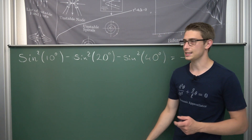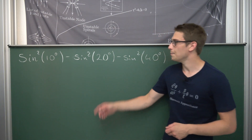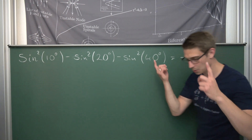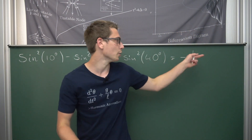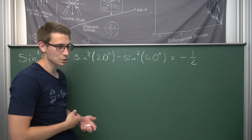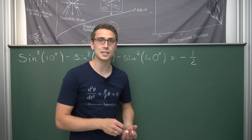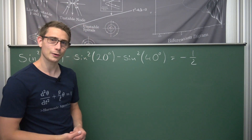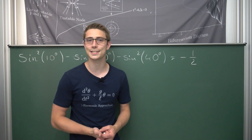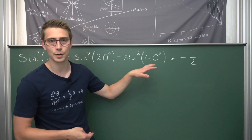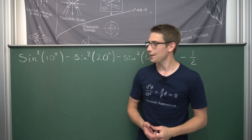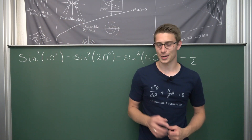Namely, the sine squared of 10 degrees — yes, I'm using degrees here, I'm terribly sorry — minus the sine squared of 20 degrees minus the sine squared of 40 degrees is supposedly equal to negative one half. After solving this, we are going to set up a system of equations and get another identity out on the other side, making use of some identities from last time. It's going to be a lot of fun, trust me.